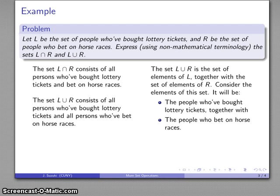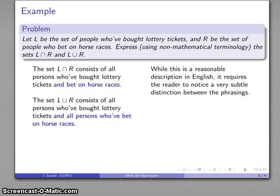Now, if you look very carefully at how we've described these two sets, while there is a difference in our phrasing—persons who've bought lottery tickets and bet on horse races versus persons who've bought lottery tickets and all persons who've bet on horse races—there is a difference in the phrasing of these two descriptions. But it's a very subtle distinction.